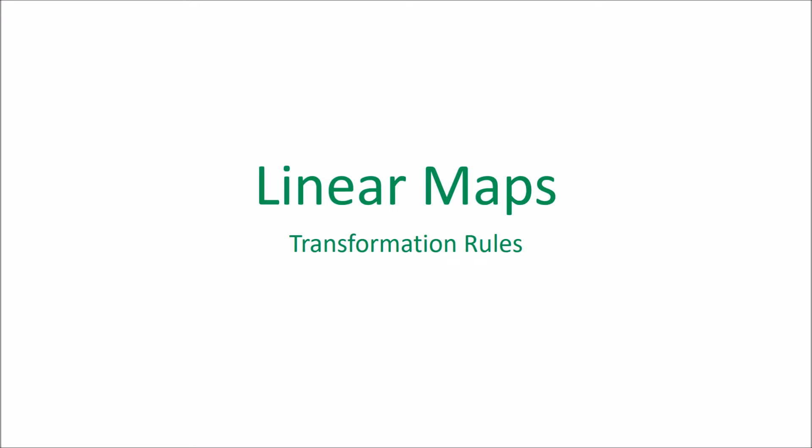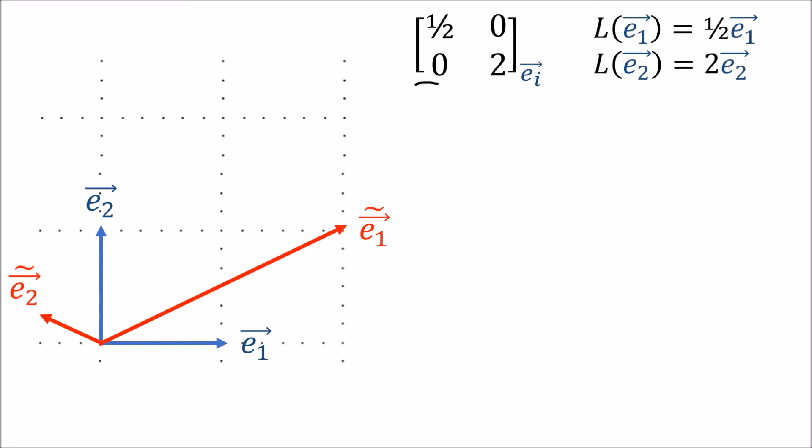In this video we're going to go over the transformation rules that linear maps obey when we go from one basis to another. So let's say I have a linear map given by this matrix, expressed in the E basis. This linear map turns E1 into 0.5 E1 and turns E2 into 2 E2. Those are just the outputs of the linear map, but the basis isn't changing — we're still measuring the outputs using the same basis.